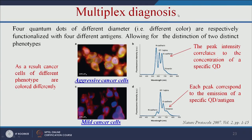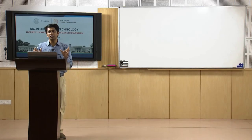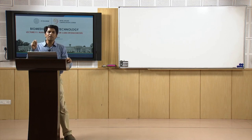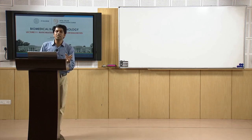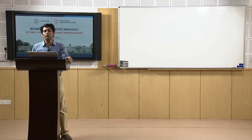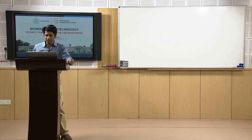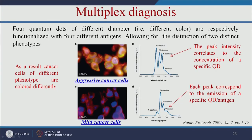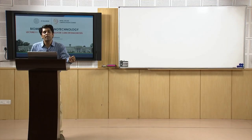For multiplexed diagnosis, four quantum dots of different diameters — different colors — are each functionalized with four different antigens. If a cancer cell expresses four different markers, the quantum dots bind to their respective markers. If all four give fluorescence, the person is in the advanced stage. If only one or two give a signal, the person is in the early stage. This multiplexed diagnosis can distinguish between early and advanced stage cancer.